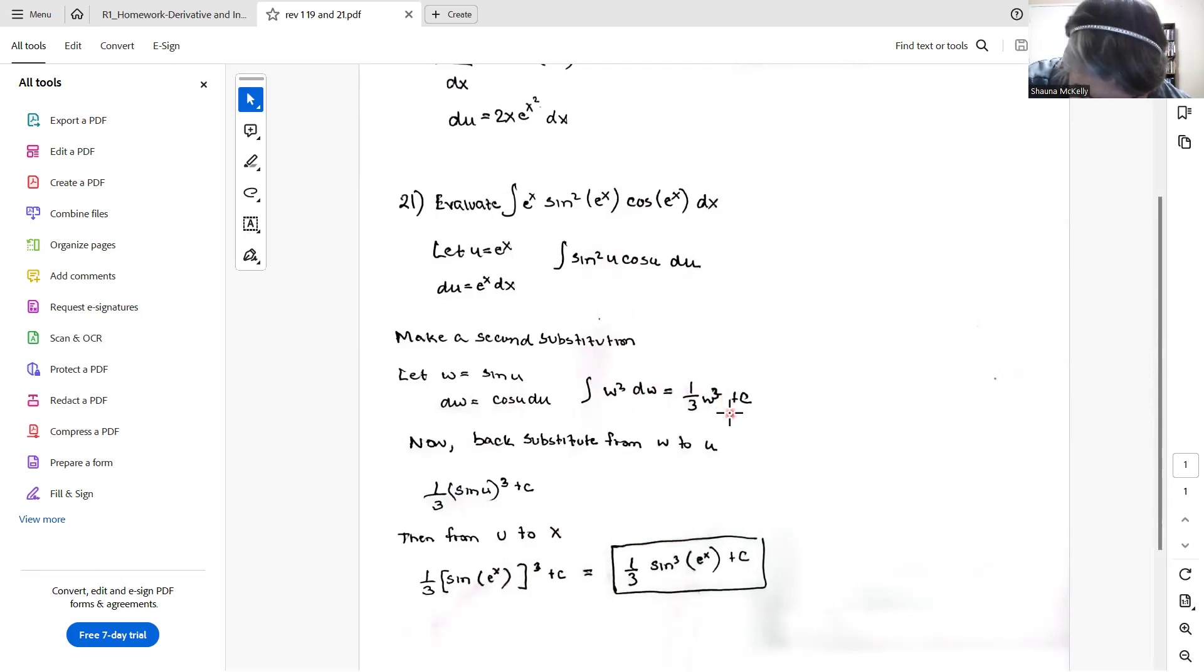Which then gives me, if w is the sine of u, then I have w² times dw. And that integral becomes w³/3 or one-third w³ plus a constant. Now we have to go back and back substitute twice because I made two substitutions. So w³, that's the same as the sine of u cubed or the sin³(u). But I need to know what u is. U is e^x. So here I have one-third sin(e^x) all to the third power, which gives me one-third sin³(e^x) plus a constant.